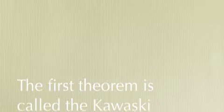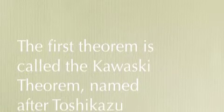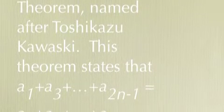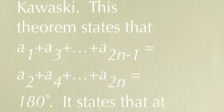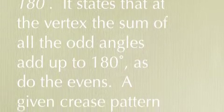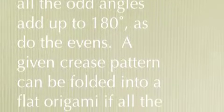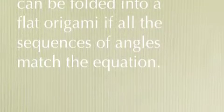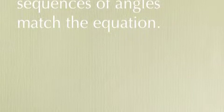The first theorem is called the Kawasaki theorem. Named after Toshikazu Kawasaki, this theorem states that a1 plus a3 plus a2n minus 1 equals a2 plus a4 plus a2n equals 180. This states that the vertex of the sum of all the odd angles adds up to 180 as do the evens. A given crease pattern can be folded into a flat origami if all of the sequences of the angles match the equation.